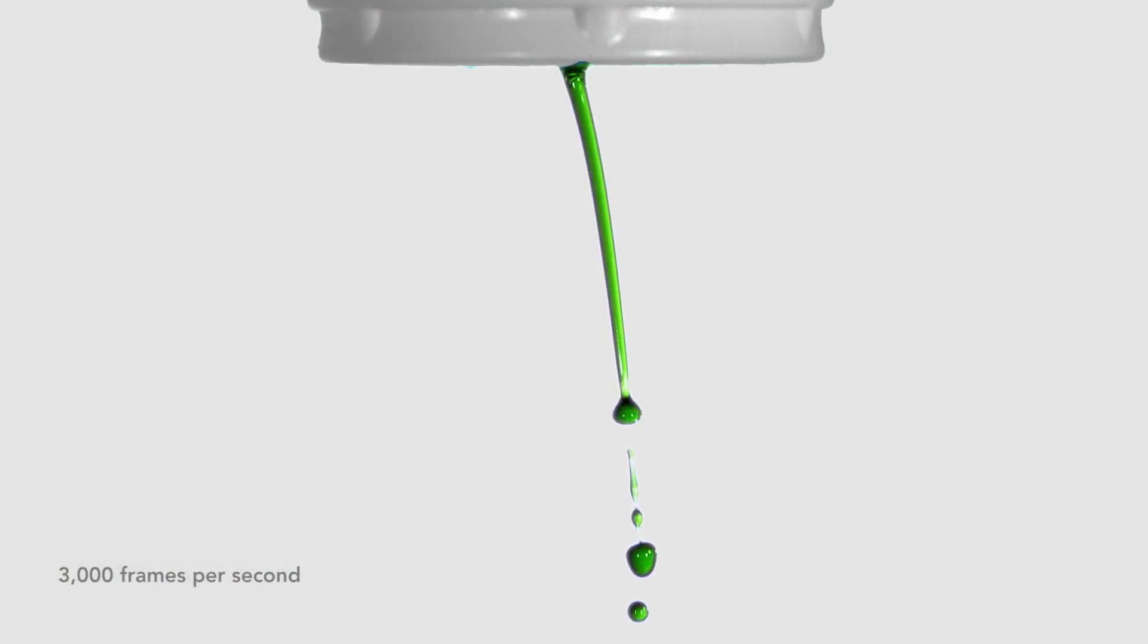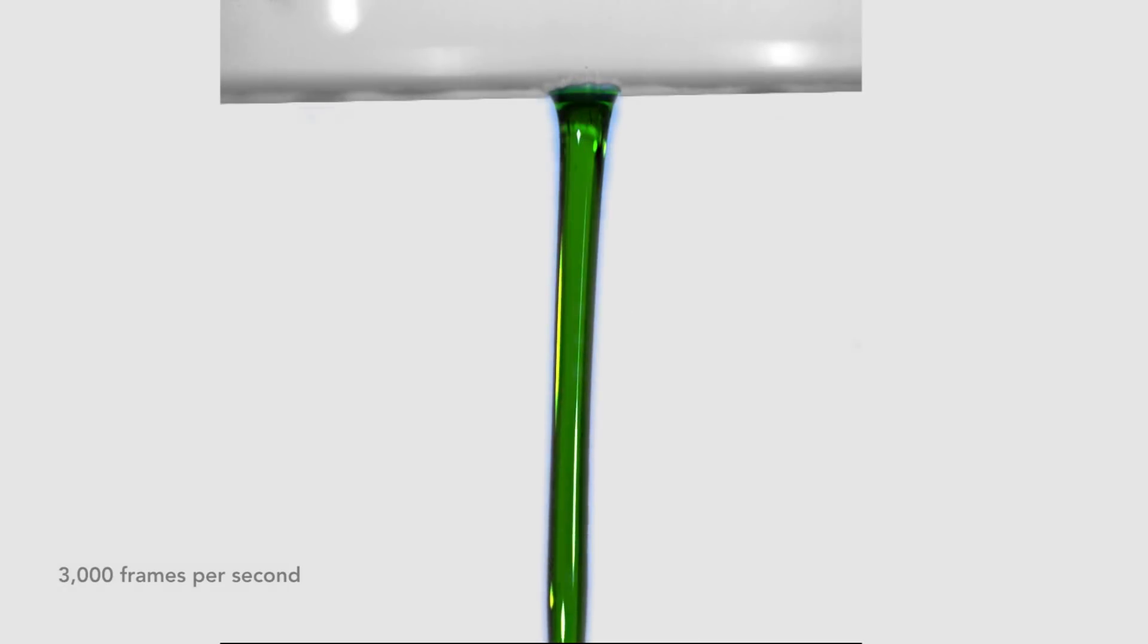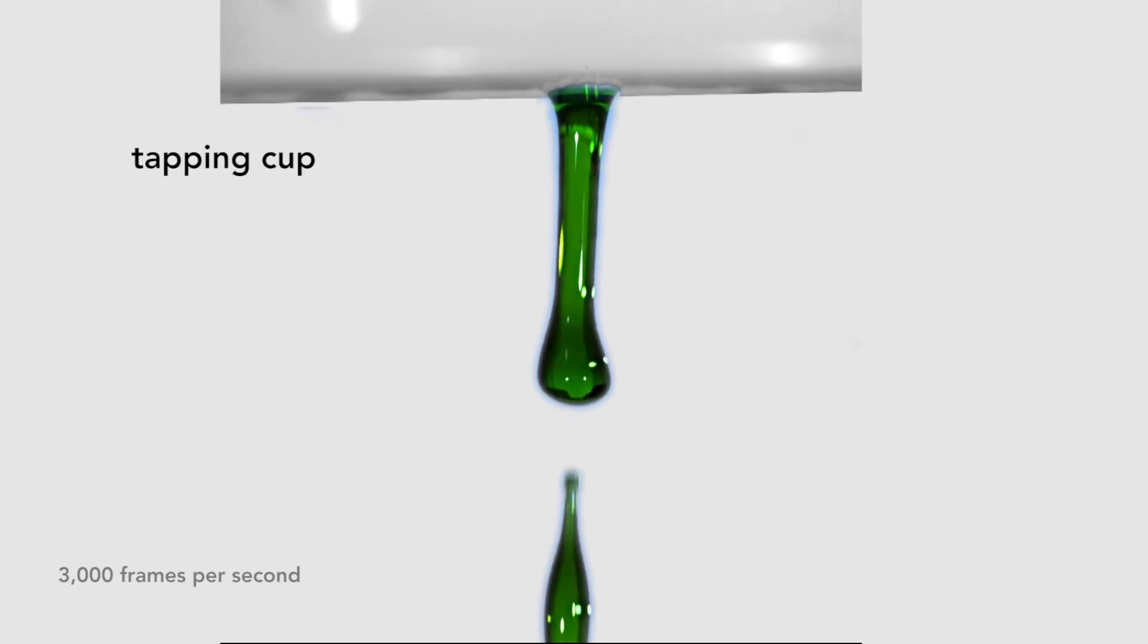Watch the stream again. Notice that the drops form near the bottom of the screen. Near the cup, no drops form. But if I repeatedly tap the side of the cup, drops form soon after the stream exits the cup.